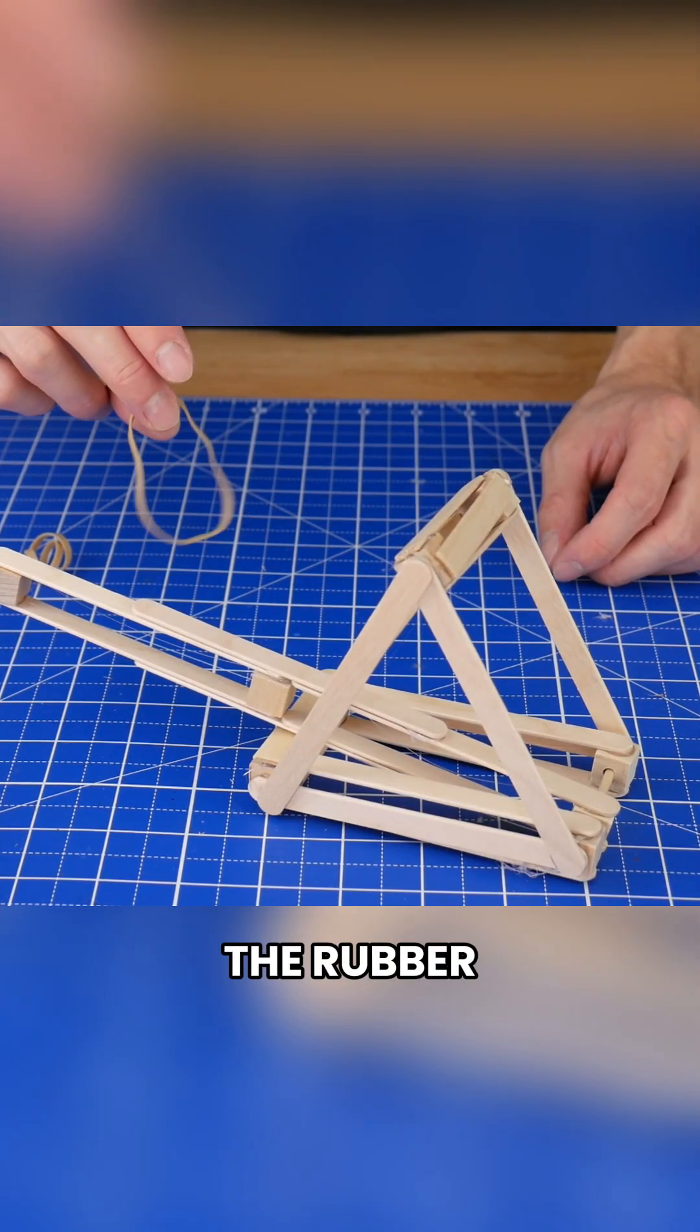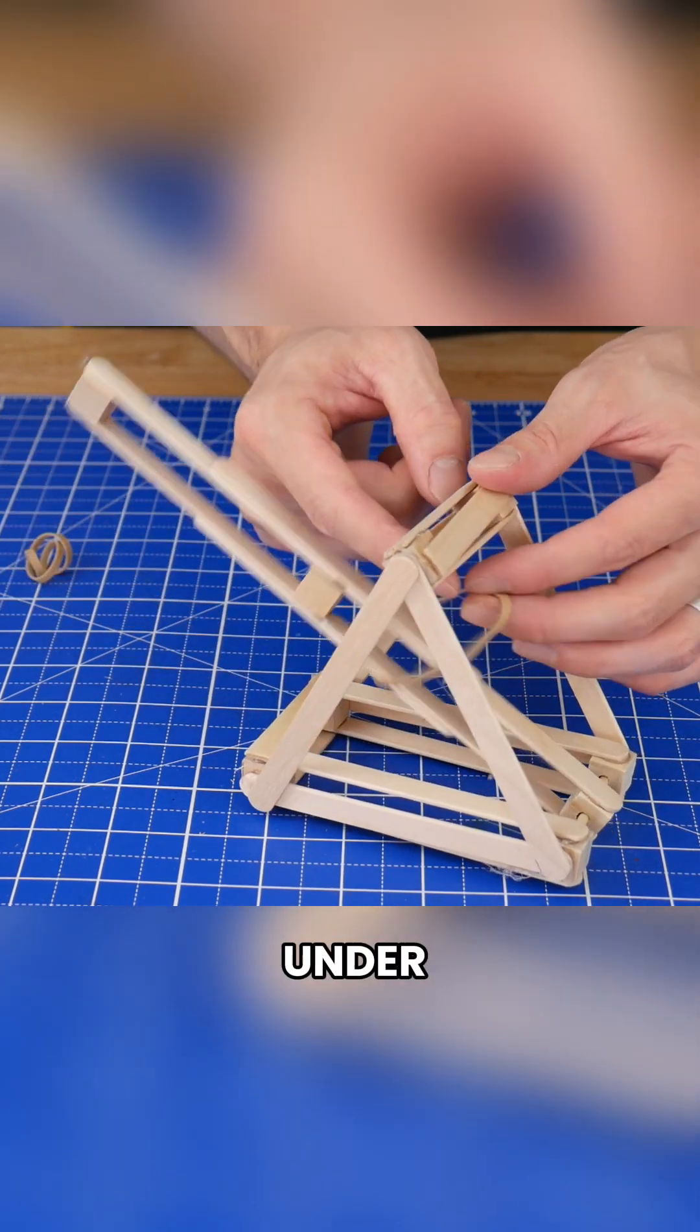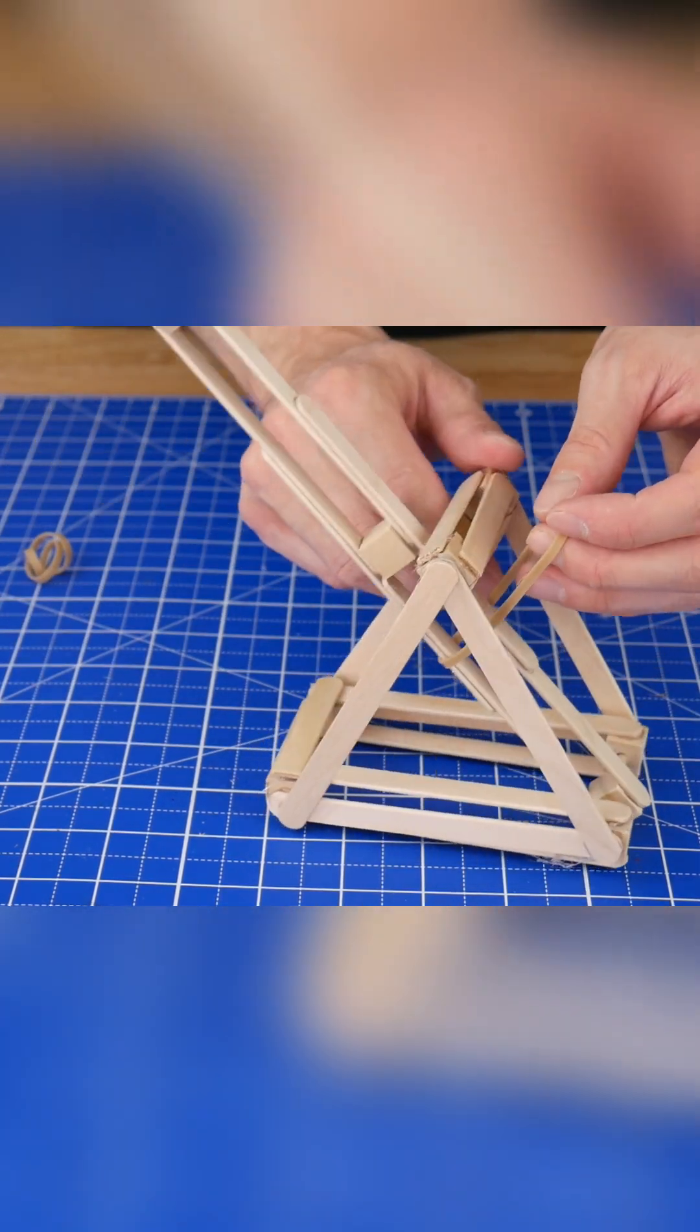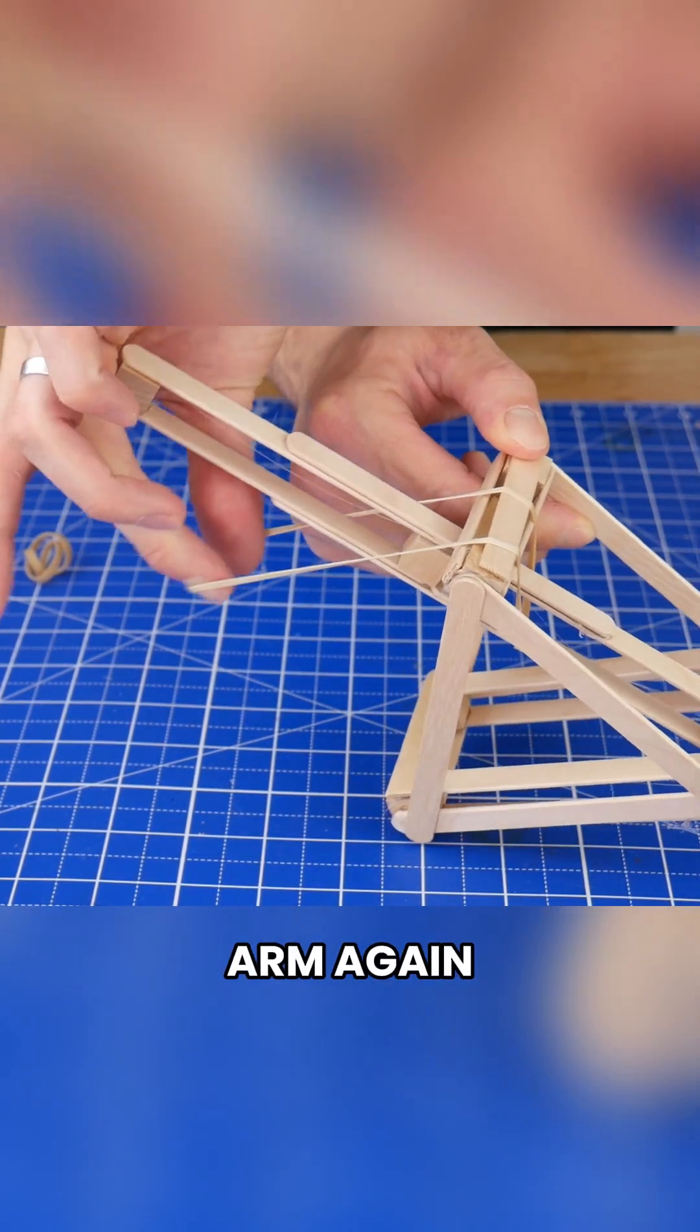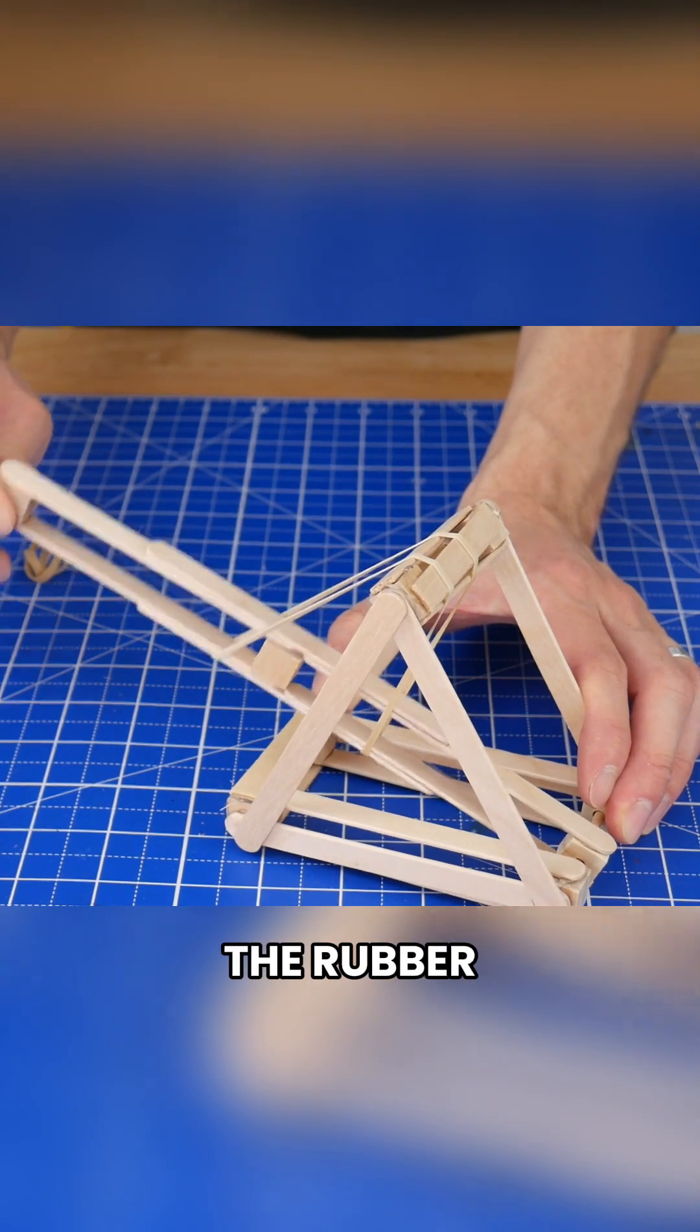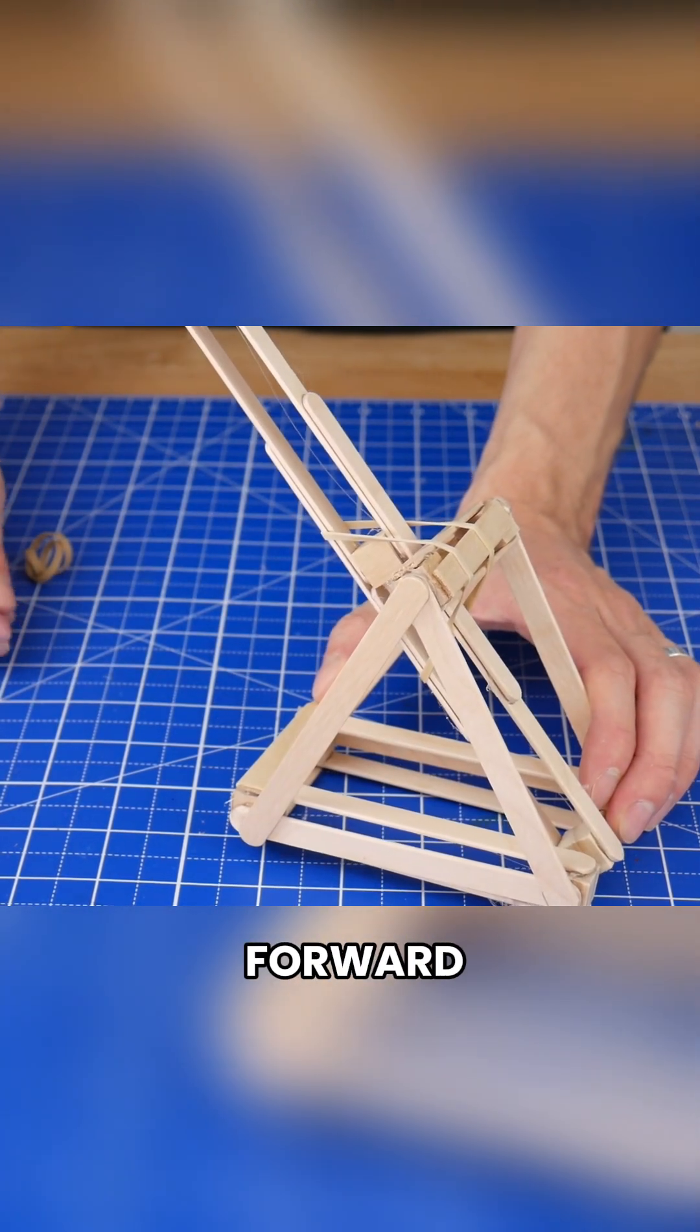Next, we're going to add the rubber bands. Loop it around the catapult arm, then pull it under this stop bar at the top, stretch it out, and loop it back over the catapult arm again. Now when the arm is pulled back, the rubber band gets stretched out, and when released, it'll snap the arm forward.